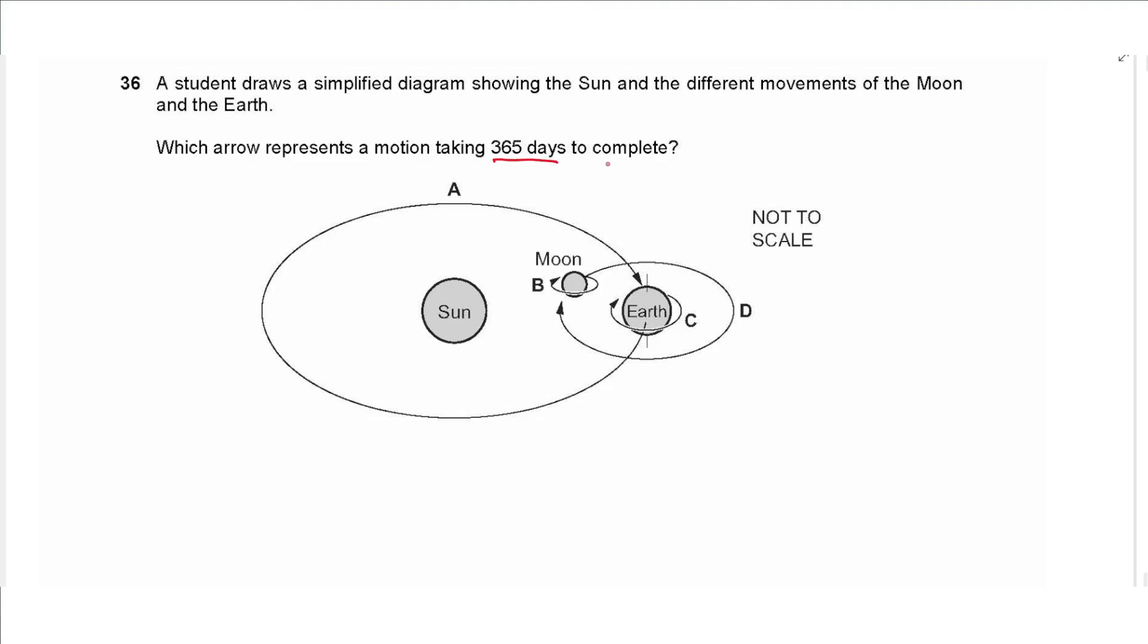Question 36 says a student draws a simplified diagram showing the sun and different movements of the moon and the earth. Which arrow represents a motion taking 365 days to complete? That's one year, so it will be A, the motion of the earth around the sun. B is the motion of the moon around itself, that's one month. And D is the motion of the moon around the earth, that's also one month. And C is the spin of the earth about its axis, that's 24 hours.